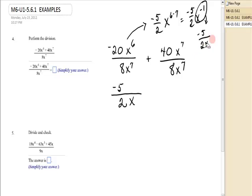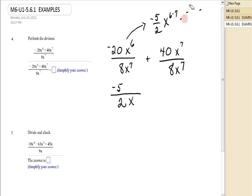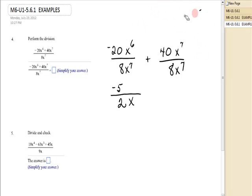So that is not my preferred way to do it, but I did want to at least show it. Plus, 40 divided by 8 is 5, x to the 7th over x to the 7th. Those divide out, so I just have 5.